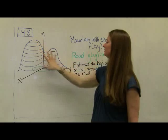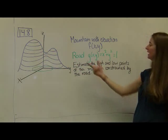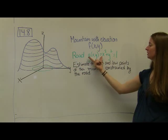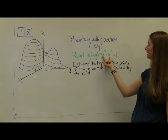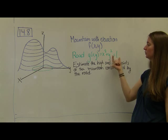And let's say there's a road that travels along the mountain, and in the xy plane, that road has the equation x squared plus y squared equals 1.